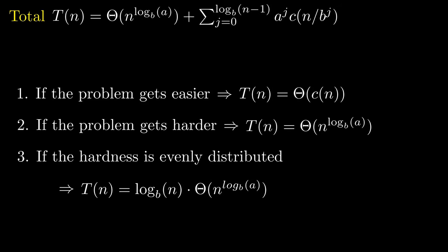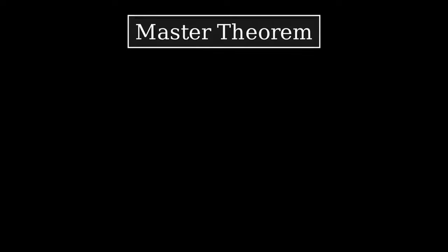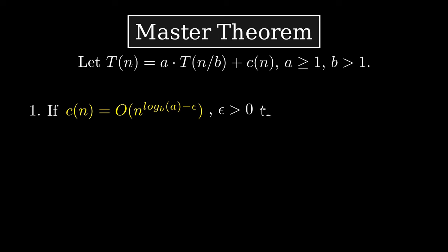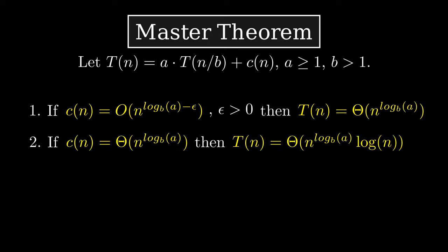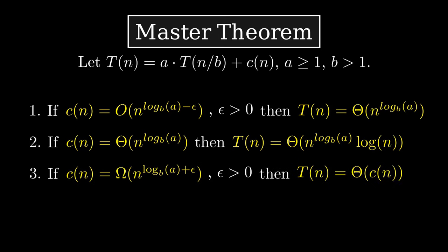This is the master theorem. The rest is only math noise. Okay, now with the formal noise. So, let our recursion be a times T of n over b plus c of n with some formal constraints. Now, remember the three cases. First case, if the work gets more, the important factors are the leaves. This is the same as the following. If c of n is polynomially smaller than the work in the leaves, then the important factors are the leaves. Second case, if the work is distributed evenly between the levels, then the total work is the work of one level times the height. Third case, if the work each level becomes polynomially smaller, then the important factor is the root. That is the full master theorem. In my humble opinion, it doesn't get much cooler than that.